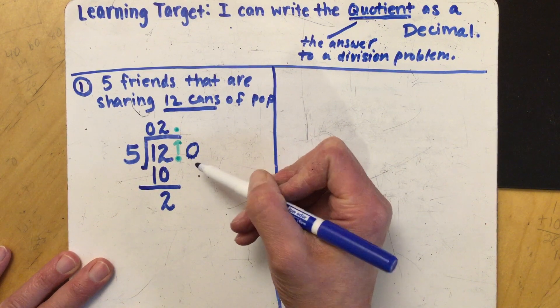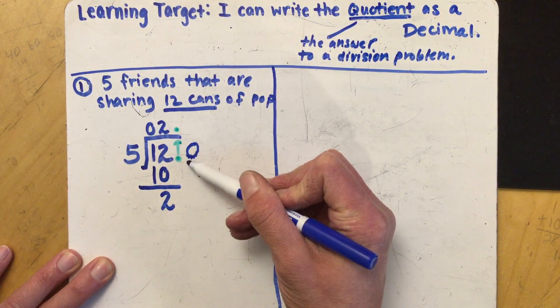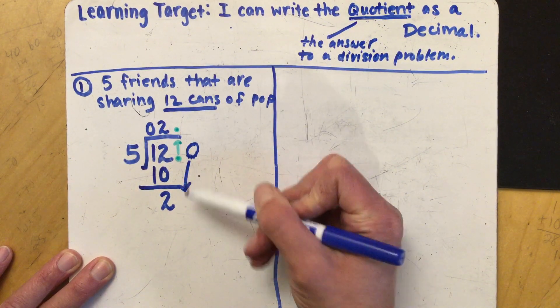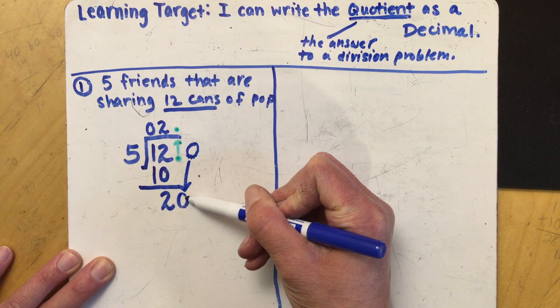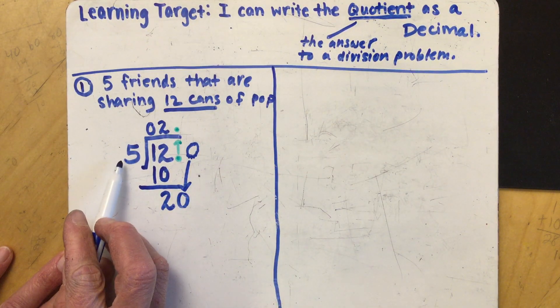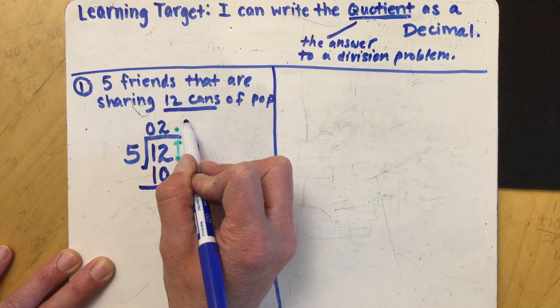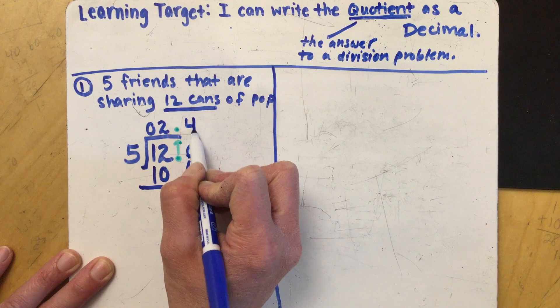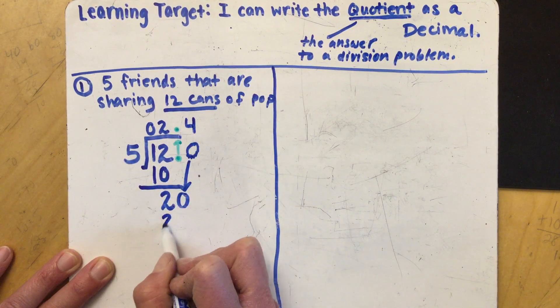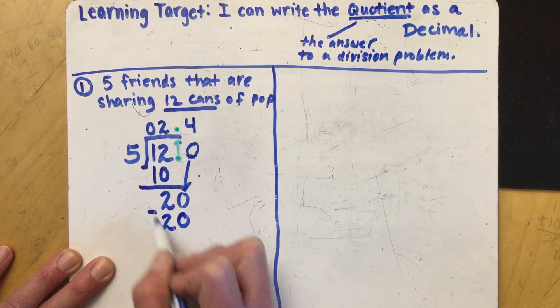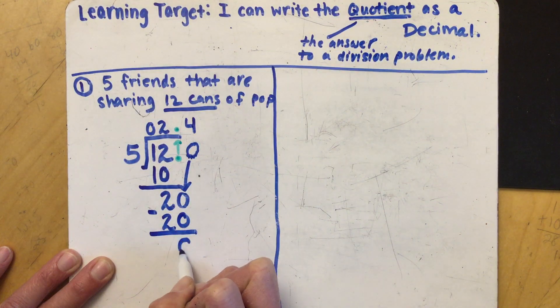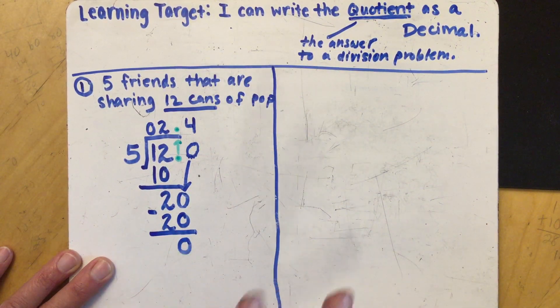Now we're just going to treat this like a normal division problem. We're going to bring our zero down and our 5 is now going to be divided into 20 and that goes four times. So I'm going to write my 4 right above that zero that I added.